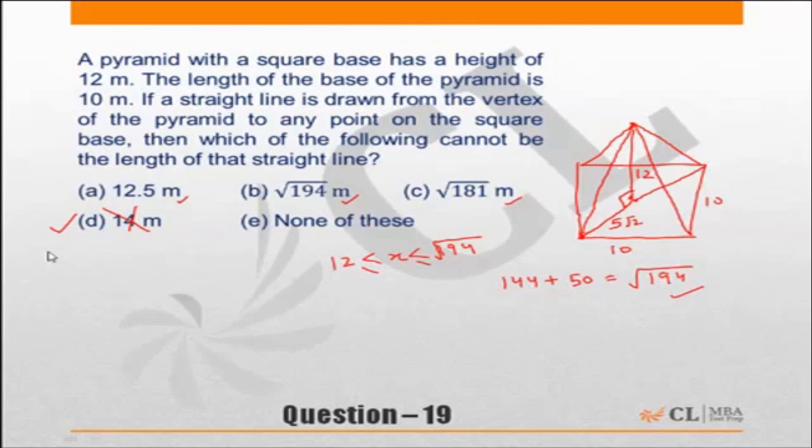So 14 meters cannot be the length of the straight line. That's the answer.